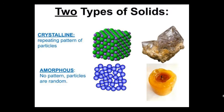If the particles in a solid have a repeating pattern, we call that a crystal, and we say that that's a crystalline solid. Sometimes the particles don't have any kind of a pattern — that's more like a wax or blobby kind of solid. We say those are amorphous. The word amorphous means that it doesn't have a shape. So candles are amorphous; it's a solid that can be any shape.